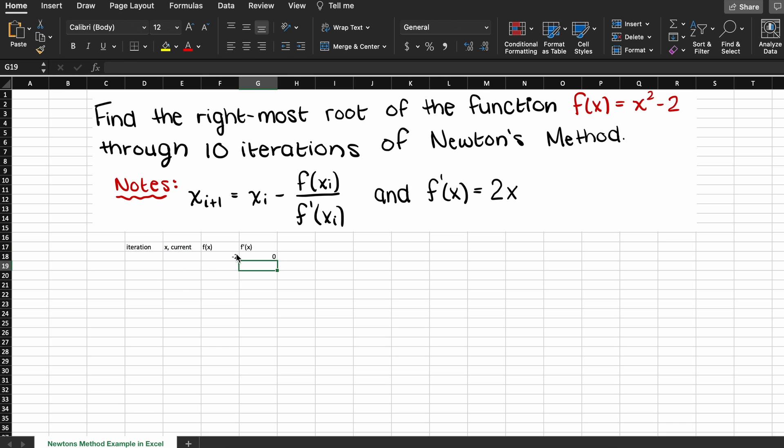Alright, so now we can fill in this row here using our initial x guess. Let's just use two. So we put that in our initial iteration zero current value of x, and as you can see here, the rest of the columns update with that input.